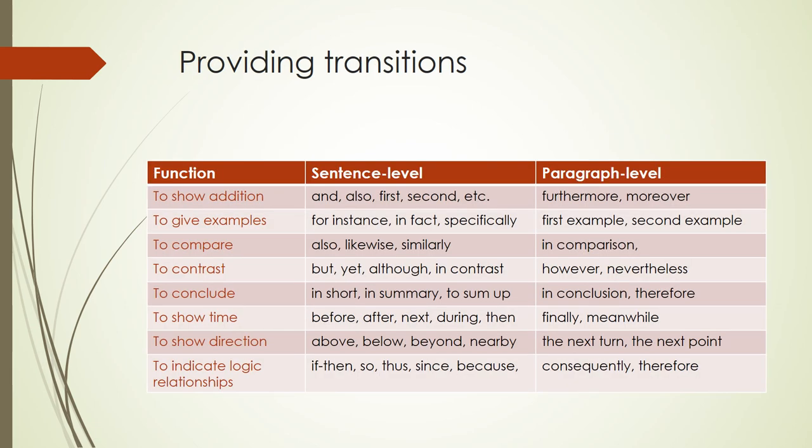Skillful writers not only show connections but also relationships between sentences by providing transitions to alert readers to simple sentence-level functions and more global paragraph-level relationships among ideas and logic in the development of a paragraph or argument. Various functions of sentences include to show addition, to give examples, to compare, to contrast, to conclude, to show time, to show direction, and to indicate logical relationships. Sentence-level transitions tend to be small, simple words that signal connections between phrases, clauses, and sentences. Skilled writers use transitions with care — making sure, for instance, not to use 'consequently' when 'also' would be more precise, for 'consequently' signals logic, but 'also' indicates simple addition.